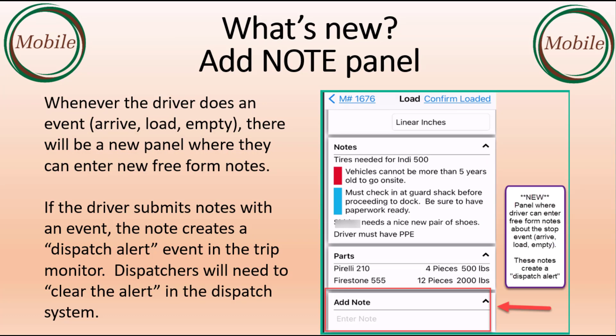Whenever the driver does an event screen like arrive, load, or empty, there will be a new panel where they can enter freeform notes. If the driver submits notes with an event, the note creates a dispatch alert event in the trip monitor. Dispatchers will need to clear that alert in the dispatch system.